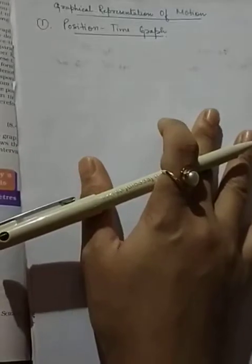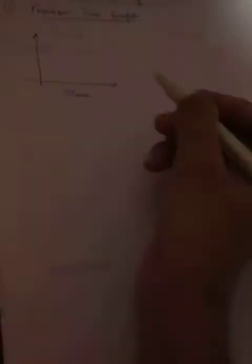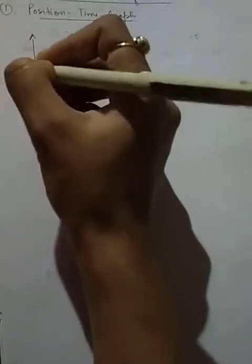Position-time graph. Position means place, and you have time. So, you have the x-axis and y-axis. The x-axis is time and distance will be at y-axis.